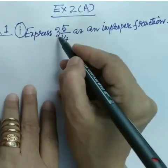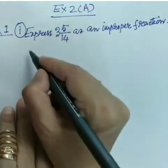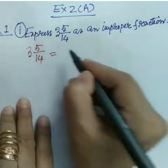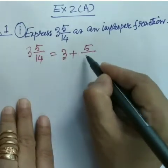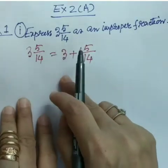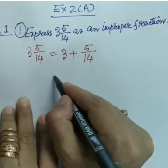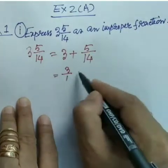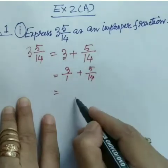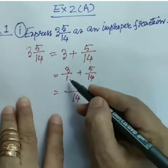A mixed fraction is a combination of a whole number and a proper fraction. Here, 3 is the whole number and 5/14 is the proper fraction. So 3 and 5/14 can be written as 3 plus 5/14, which is 3/1 plus 5/14, since every whole number has 1 as its denominator. The LCM of 1 and 14 is 14.